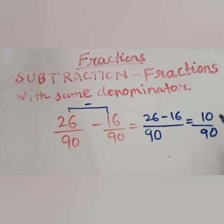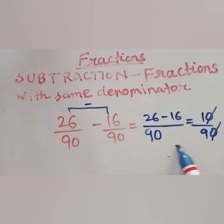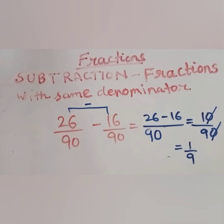Here it can be simplified further. The zeros get cancelled, so the answer is 1 by 9.